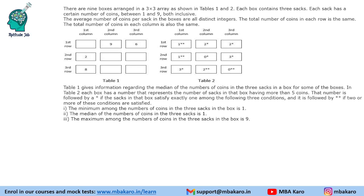Hello everyone, welcome to Aptitude Jab. This set from CAT 2023 Slot 2 DILR says that there are 9 boxes arranged in a 3x3 array as shown in tables 1 and 2. Each box contains 3 sacs, each sac has a certain number of coins between 1 and 9, both inclusive. The average number of coins per sac in the boxes are all distinct integers. The total number of coins in each row is the same, and the total in each column is also the same.